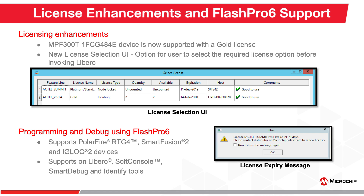There are a couple of major licensing enhancements with Libero SoC version 12.2. The MPF300T-1FCG484E device has been added to the gold license to support the new PolarFire Splash Kit. Based on additional customer feedback, a License Selection UI has been introduced, enabling users to select the required license before invoking Libero. If the license is expiring in 15 days or earlier, the UI displays a warning message to help the user place a renewal order. Version 12.2 also supports programming and debug tools using Flash Pro 6, with improved programming time compared to older versions.